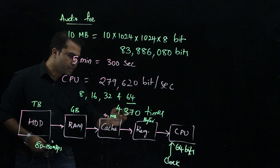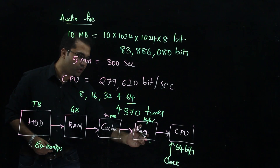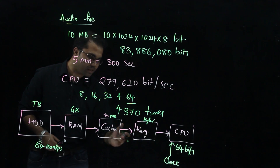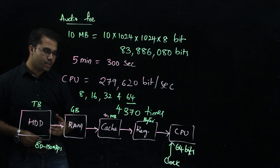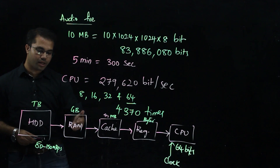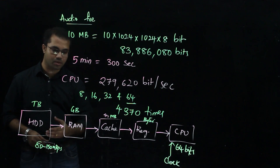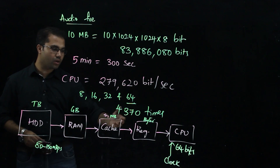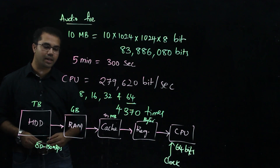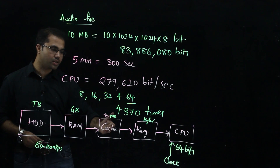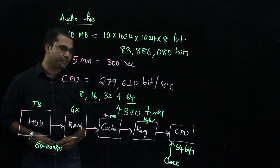This is how the data feeding is important, as you can see from this example. This is the role of the register, cache, RAM, and hard disk. I hope you understood the concept of these memory devices and why we use all of them in a basic computer system. It is necessary to have proper feeding to the CPU. Thank you.